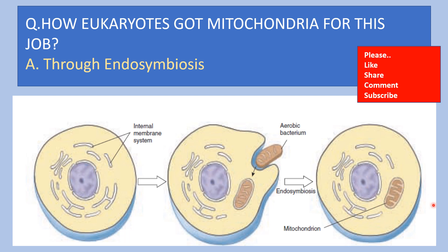Mitochondria are thought to have originated from bacteria capable of carrying out oxidative metabolism. This diagram represents the theory of endosymbiosis. This is an ancestral eukaryotic cell with an internal membrane system, and here this ancestral eukaryotic cell is engulfing this aerobic bacterium, which later on becomes mitochondria in a eukaryotic cell.